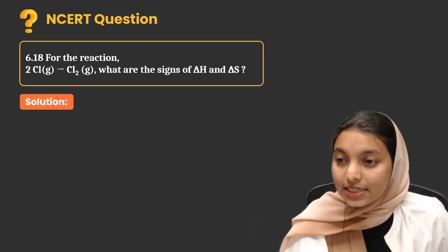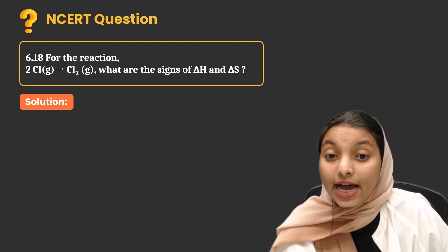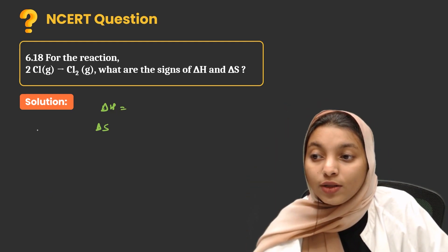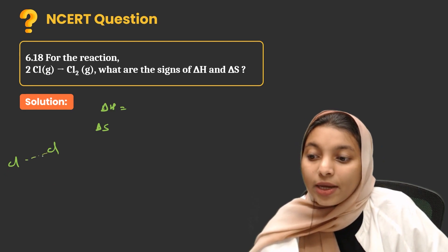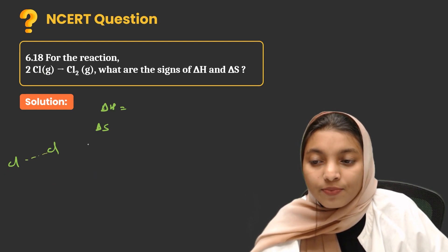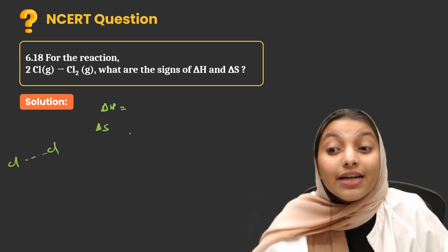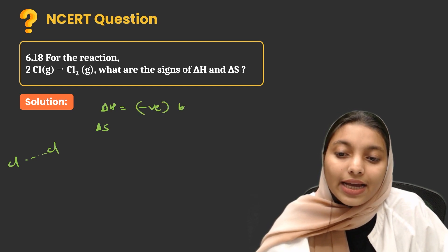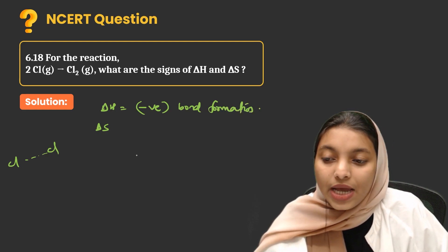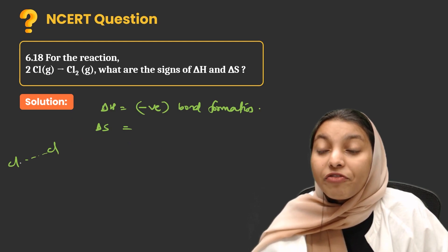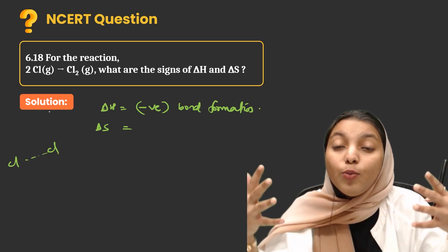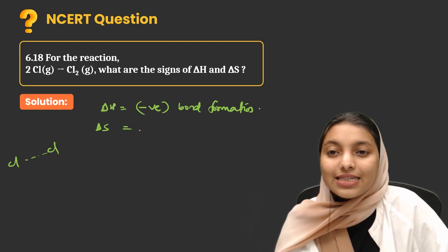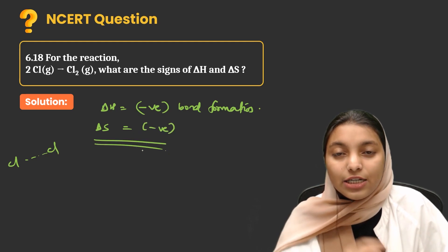For the reaction 2Cl(g) → Cl2(g), what are the signs of delta H and delta S? During bond formation, energy is always released, so it is an exothermic process — delta H is negative. Two separate species join to form one molecule with more arrangement, so entropy decreases — delta S is also negative.